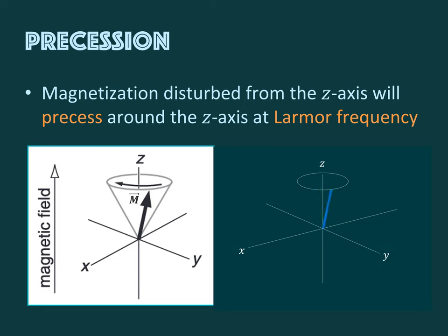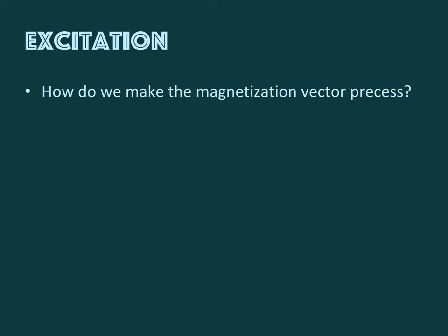Think back to the compass needle — if you nudge it out of its equilibrium position it will start swinging back and forth. Similarly, if we nudge the macroscopic magnetization out of its equilibrium position, which is parallel to the z-axis, it will start precessing around the z-axis just like the individual spins do. And like the individual spins, the frequency with which it precesses is the Larmor frequency, which is directly proportional to the external magnetic field B0. So how do we actually nudge it out of equilibrium? How do we make the magnetization precess?